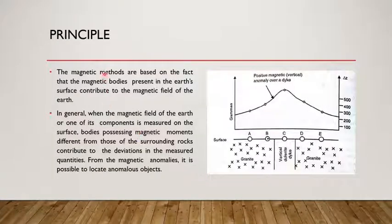The principle behind the magnetic method is based on the fact that magnetic bodies present in the earth's subsurface contribute to the magnetic field of the earth. In general, when the magnetic field of the earth is measured on a surface and the body possessing magnetic properties differs from the surrounding rocks, for example the magnetic field contributions of granite will be somewhat lesser.